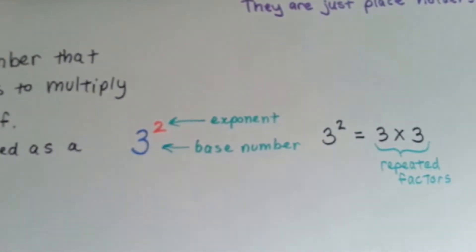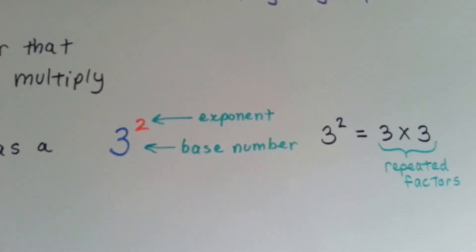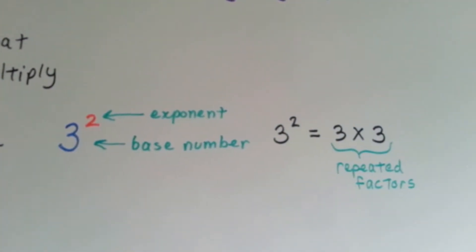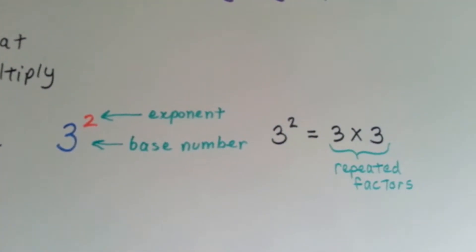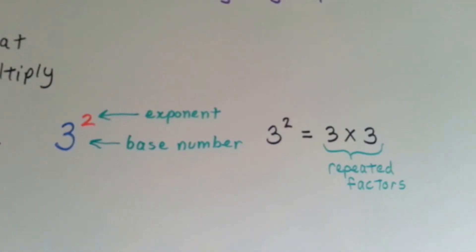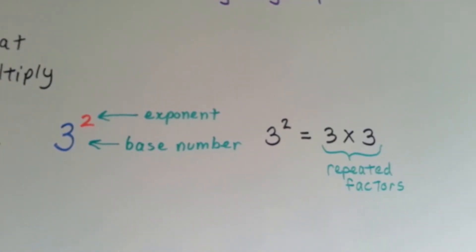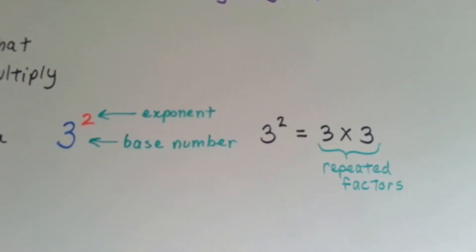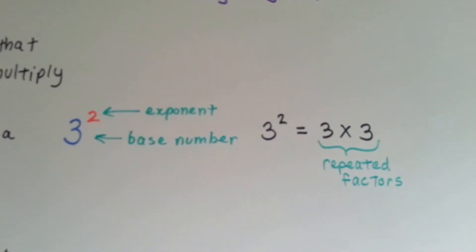The 3 is the base number. The little red 2 is an exponent, and what it means is 3 times 3. The little red 2 is telling the 3 how many times to multiply to itself. And then the 3 times 3 are the repeated factors.